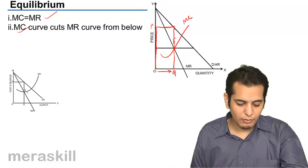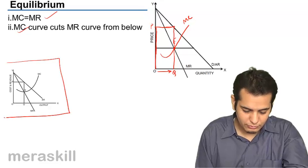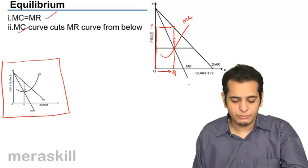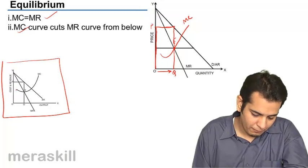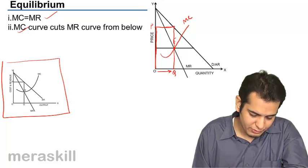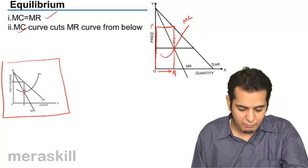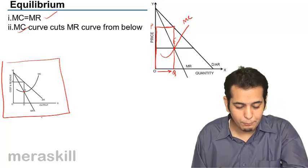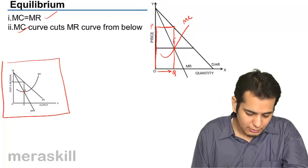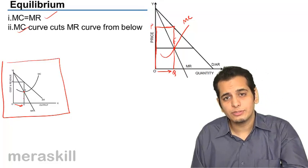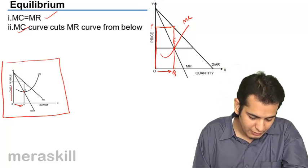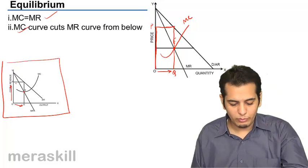This is confirmed by this chart. You can see that we have MR curve and we have AR curve, and then there is this MC curve which cuts the MR at point E. At this point, it is producing OQ units. This is the equilibrium quantity and OP is the equilibrium price.